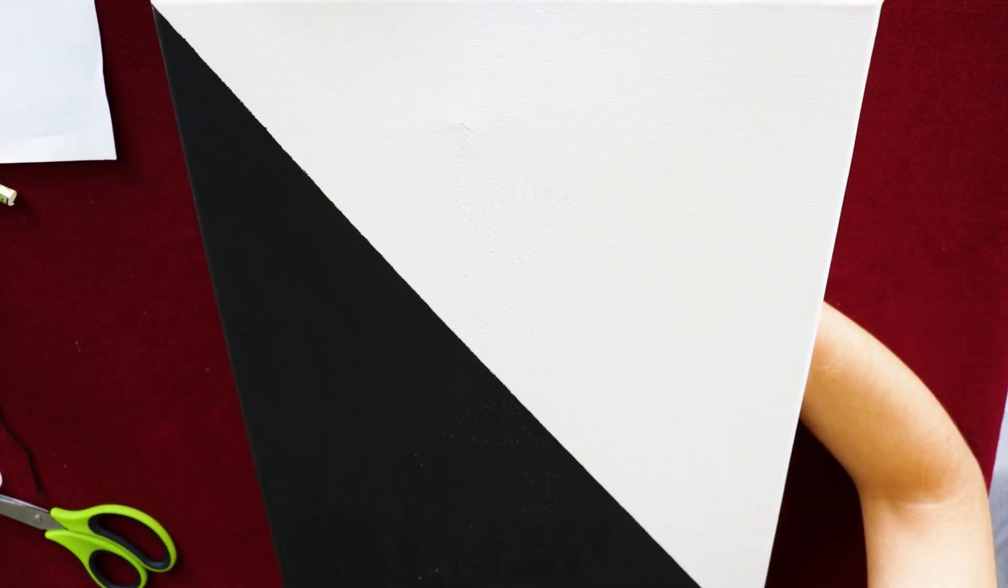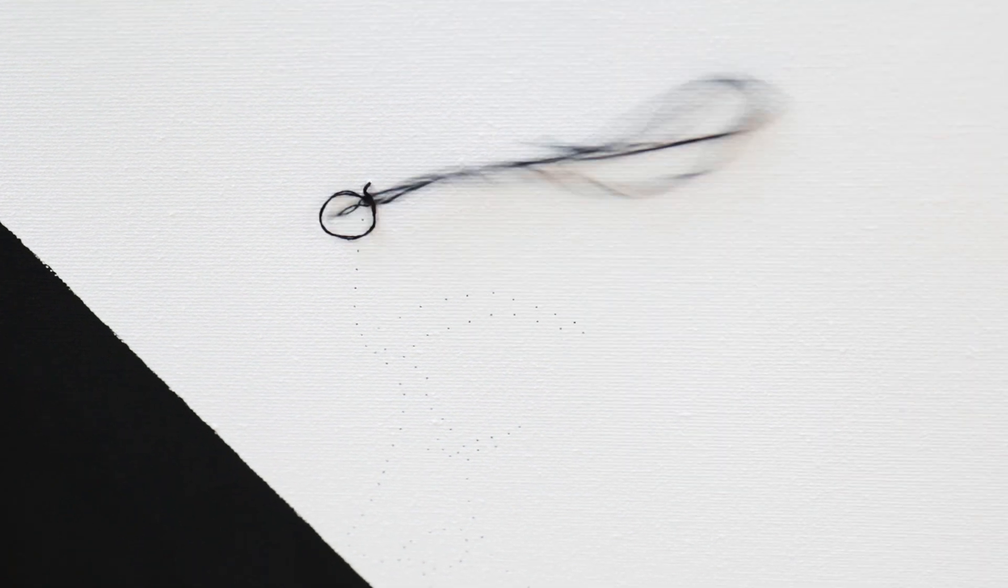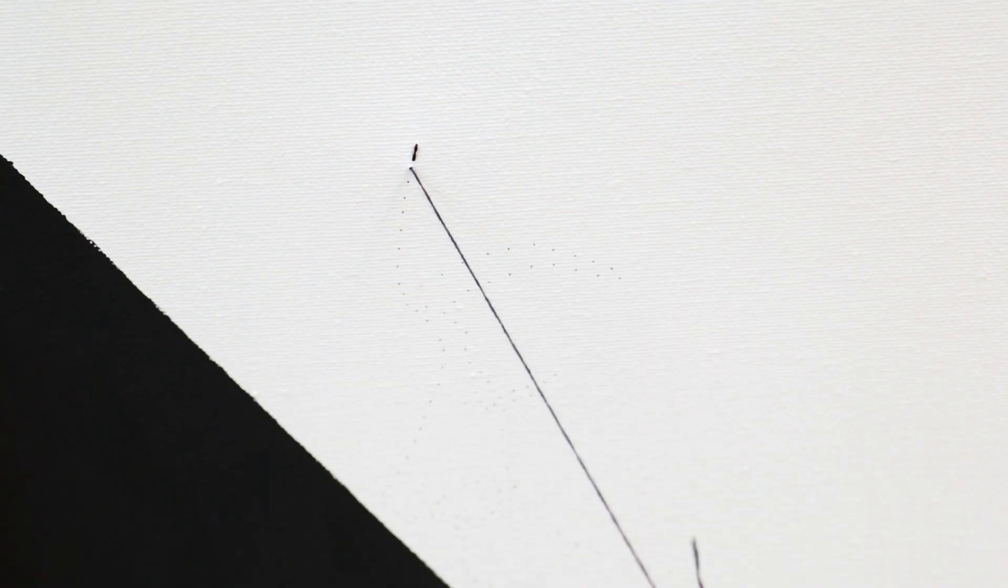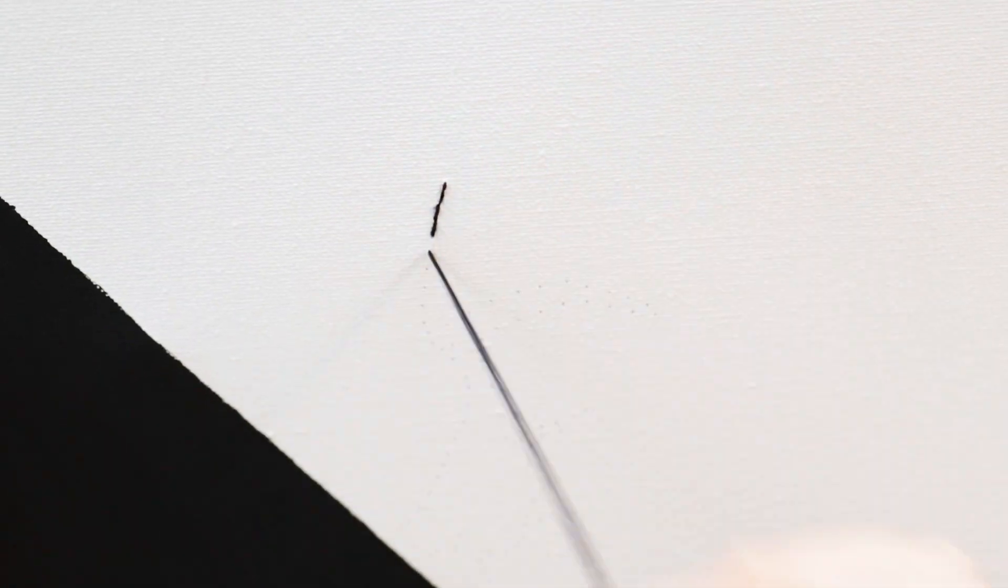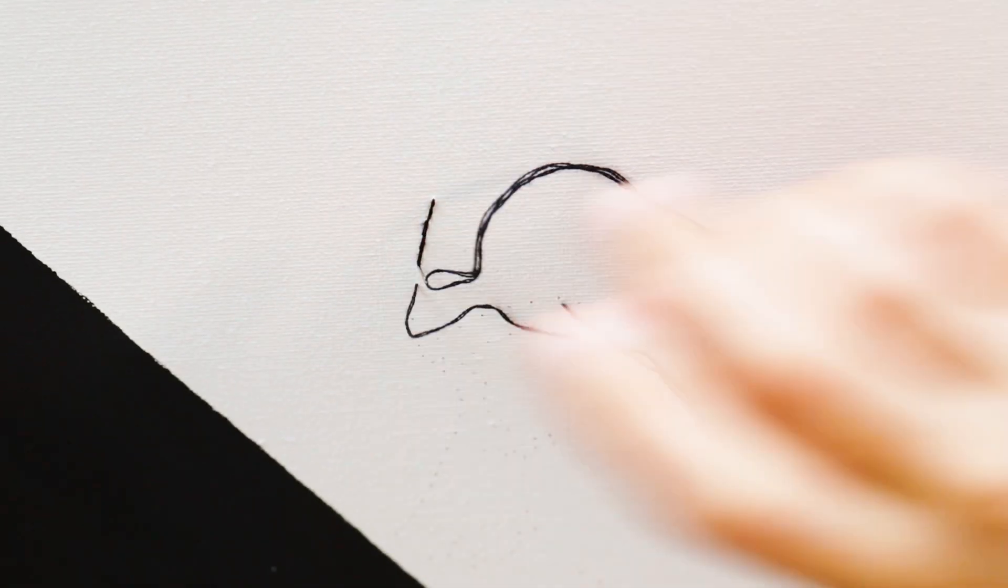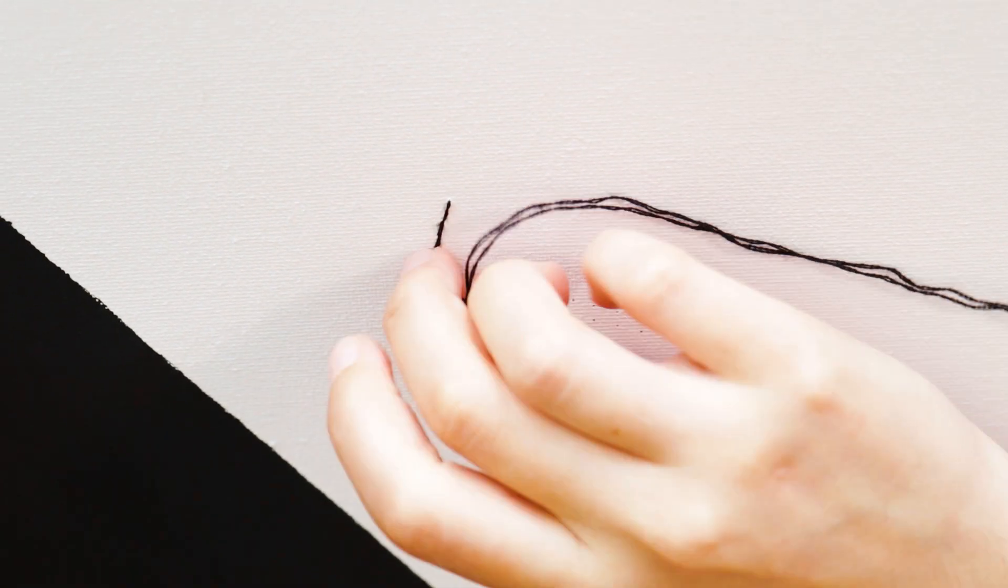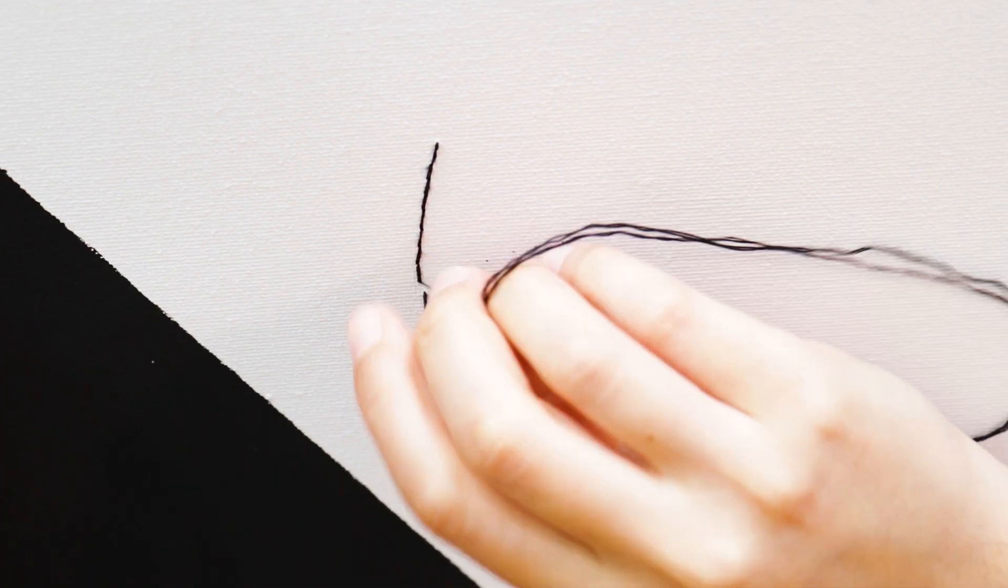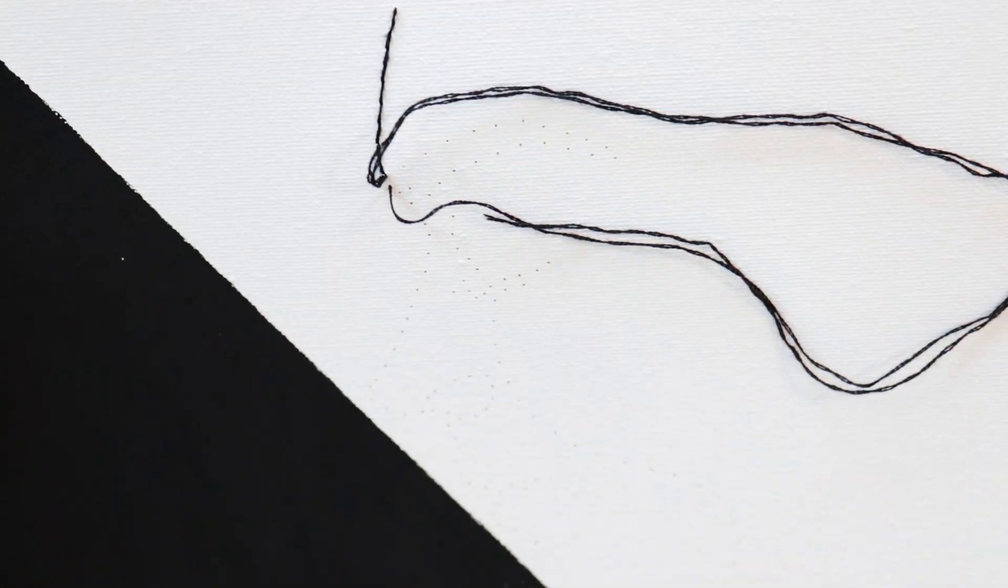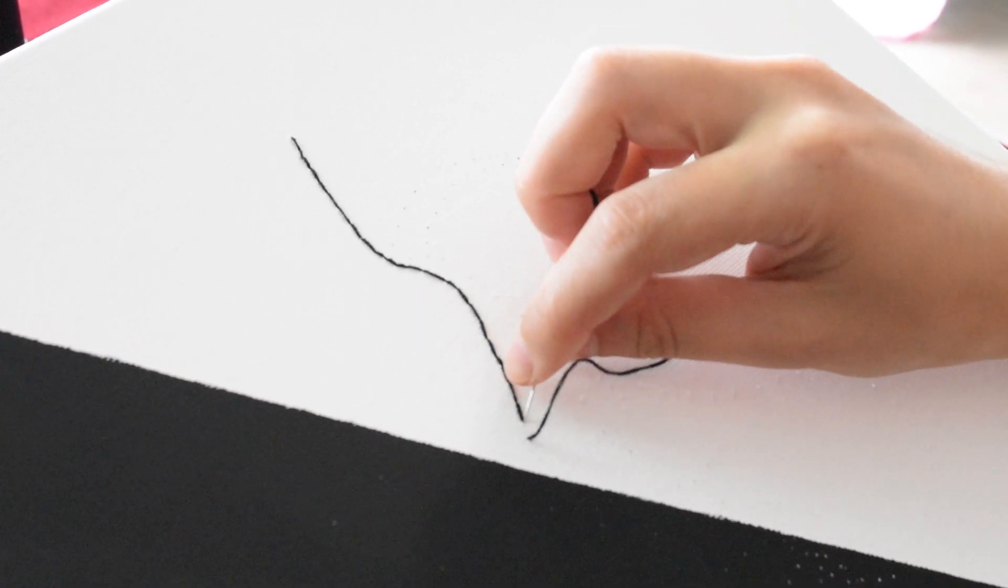So we are going to use the backstitch for the embroidery. This means that we will start and come up through the second hole and come back into the first hole. Up through the third hole and back down the second hole, and so on.